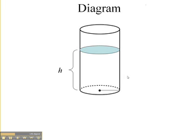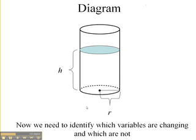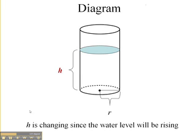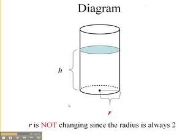Now we also have a radius of our cylinder, so let's call the radius r. Now we need to identify which variables are changing and which are not. h is changing because the water level is going to be rising, so h we need to keep as a variable. r, the radius, is not changing in this case because we have a cylinder, so it's always going to be 2.